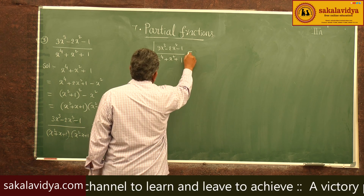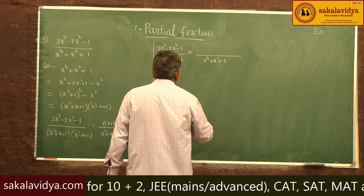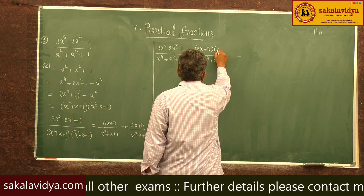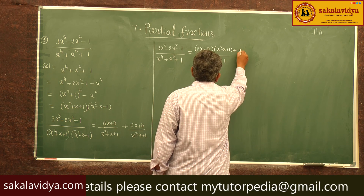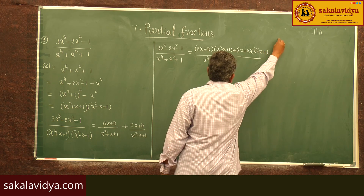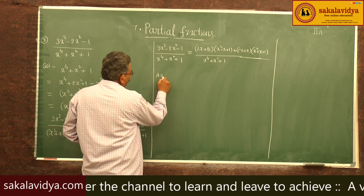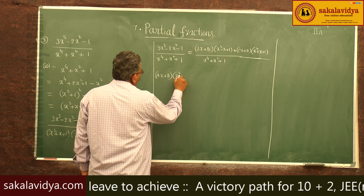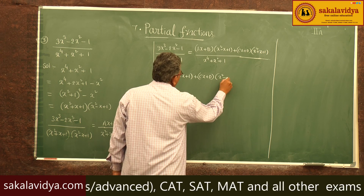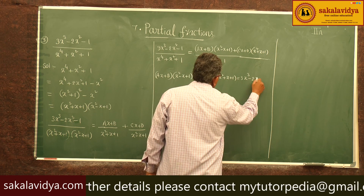So (3x³ - 2x² - 1) / (x⁴ + x² + 1) equals [(ax + b)(x² - x + 1) + (cx + d)(x² + x + 1)] / (x⁴ + x² + 1). Therefore: (ax + b)(x² - x + 1) + (cx + d)(x² + x + 1) = 3x³ - 2x² - 1.